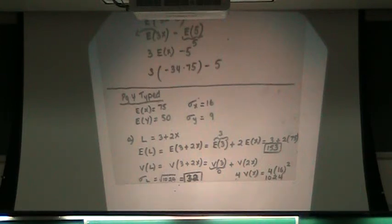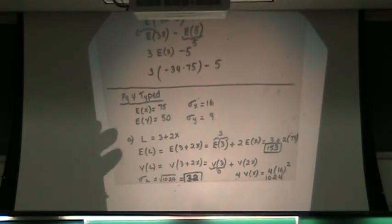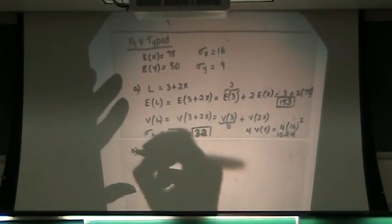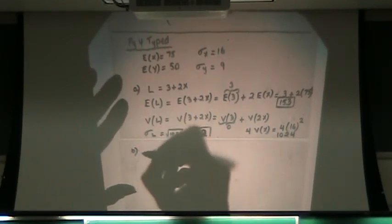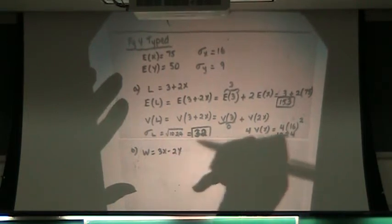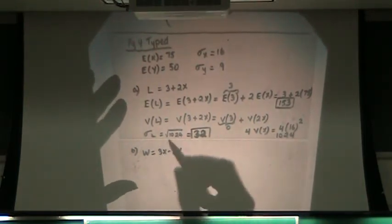Part B says let W be a linear combination of X and Y. Find the mean, variance, and standard deviation. You will certainly have problems like this. These are the giveaway problems on your test, so make sure that you see what I'm doing. Part B says W equals 3X minus 2Y. Find the mean, variance, and standard deviation.